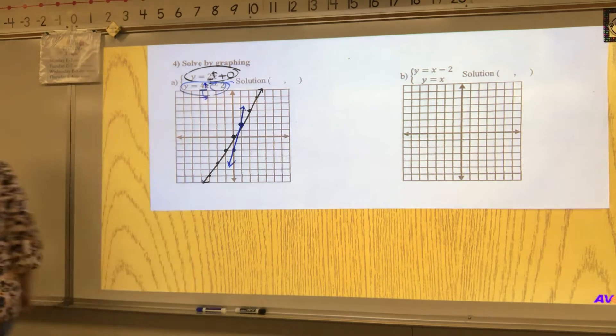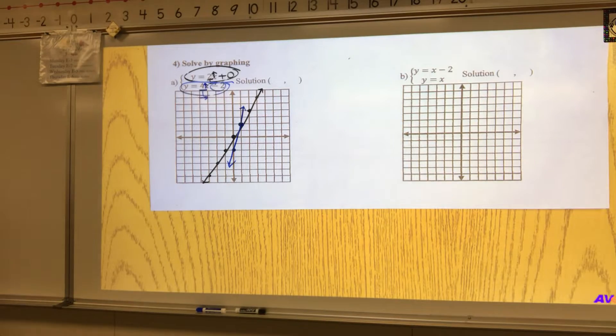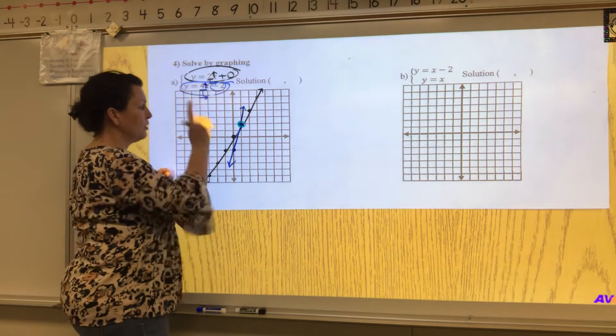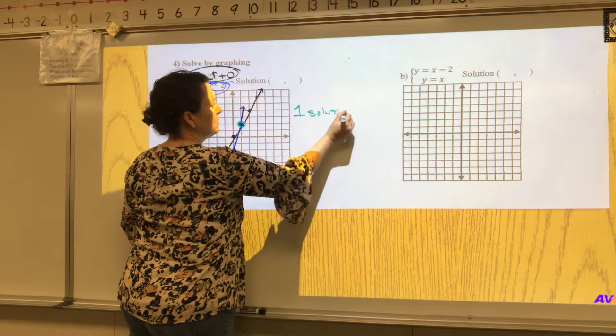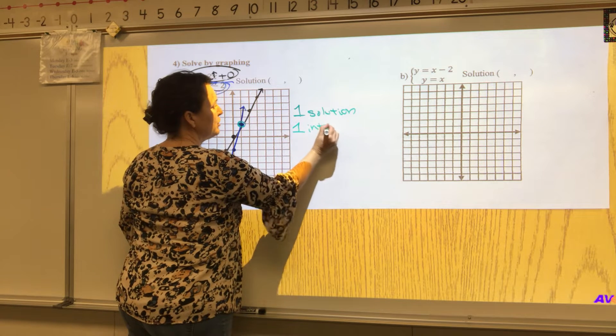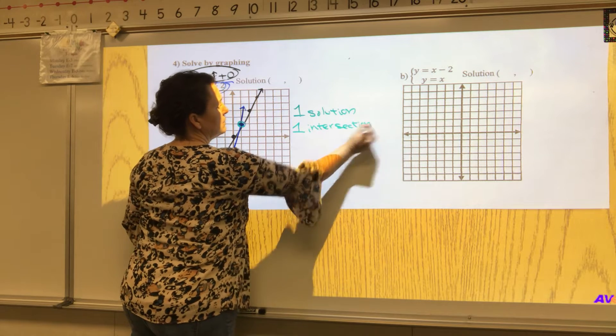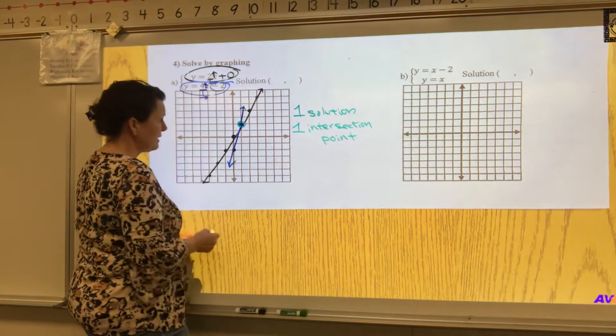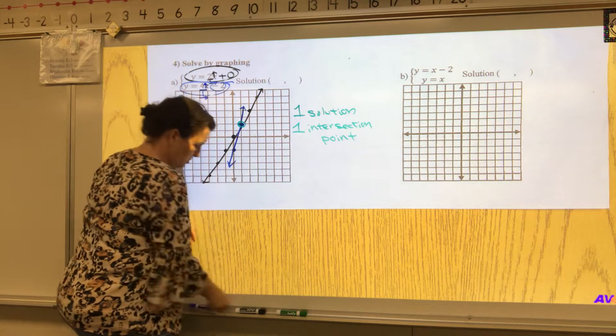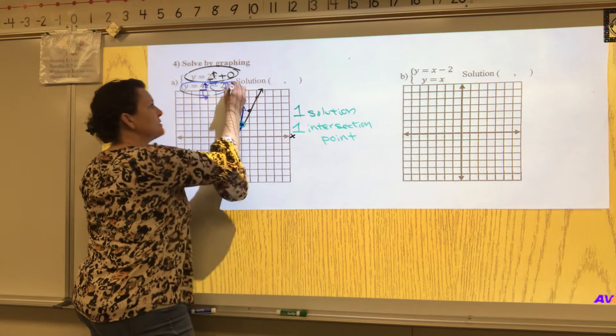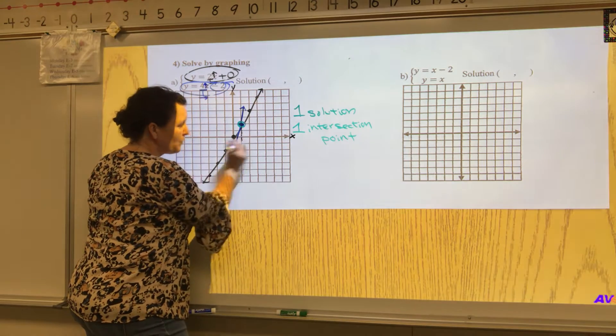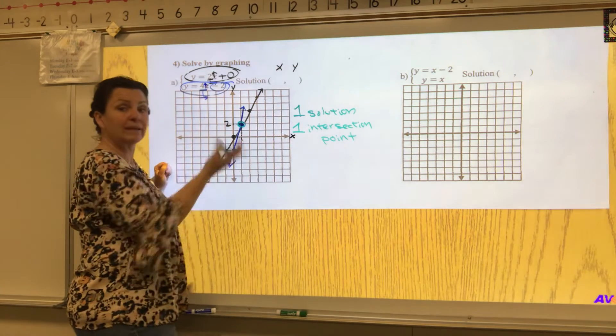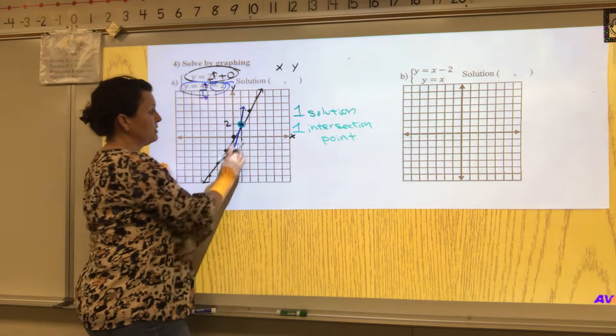If you don't see it, let me grab a third color so you can see it best. Right there, there's my intersection point. There was one solution, one intersection point. Your job is to find where that point is. We're going to go straight down to find our x and over to find our y. So I know that's the number one and that's the number two. A point is always written x value first and then y value second. So I have one, two.